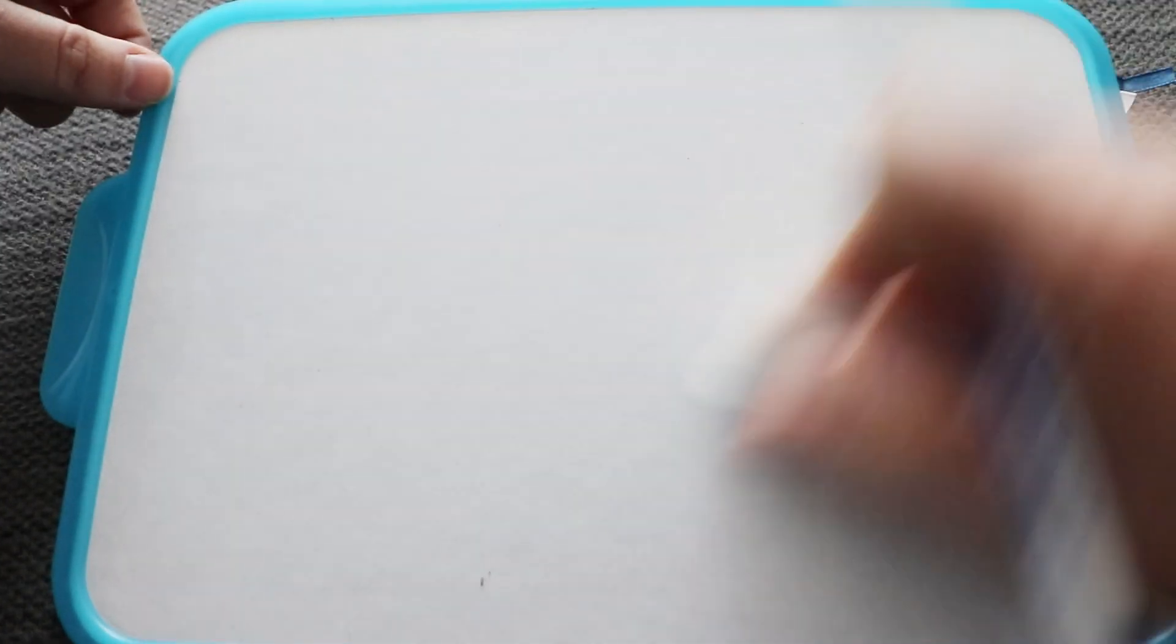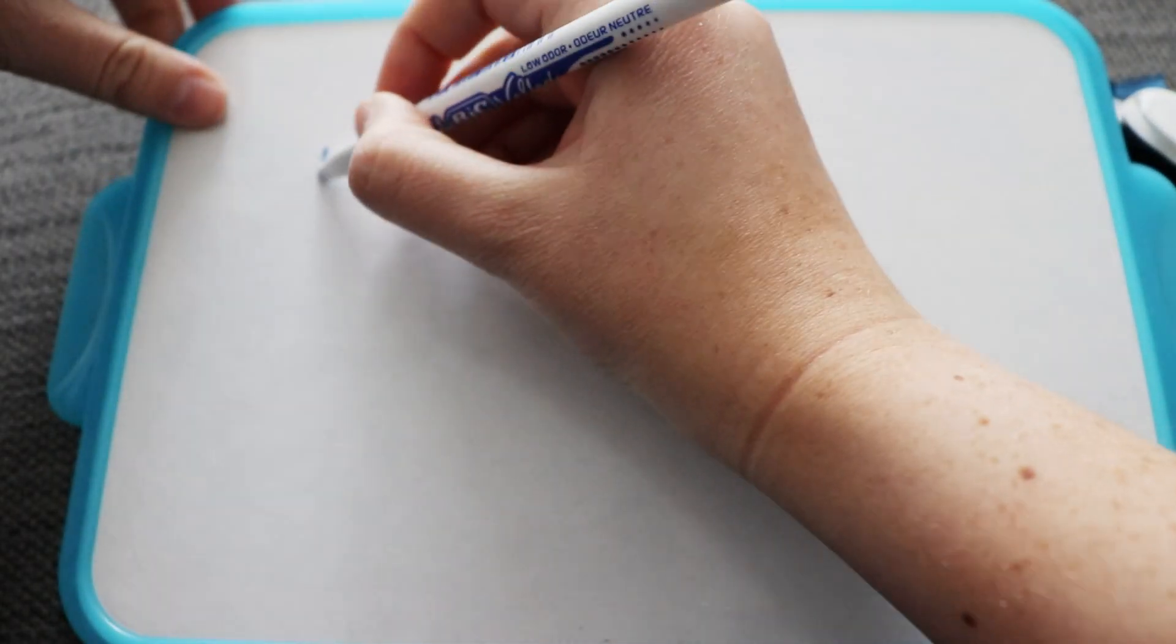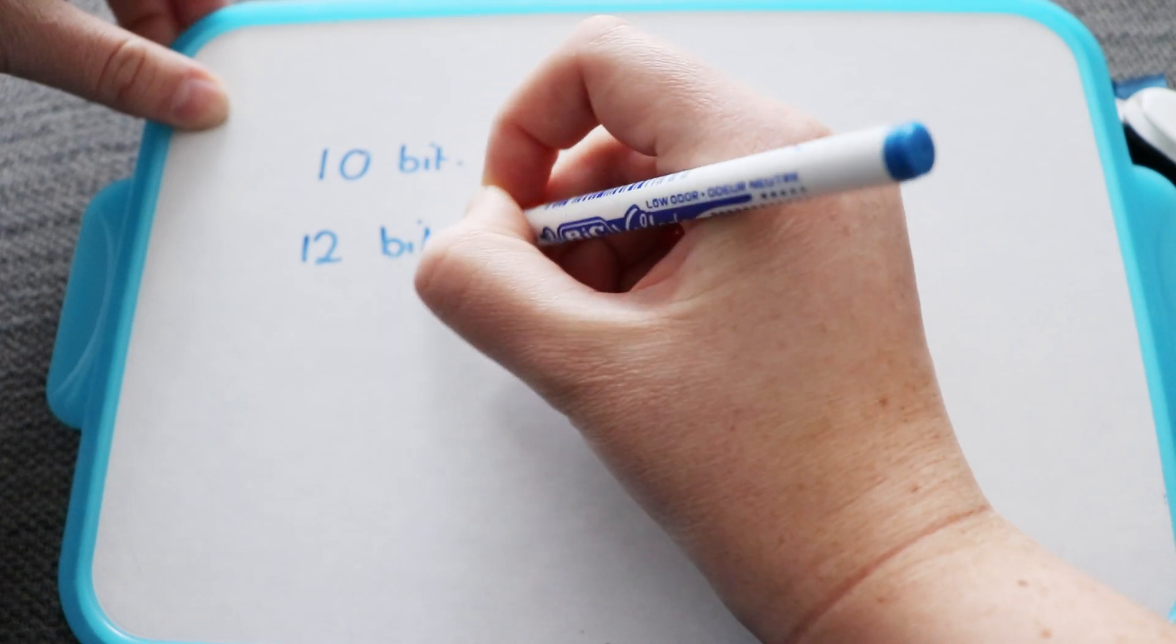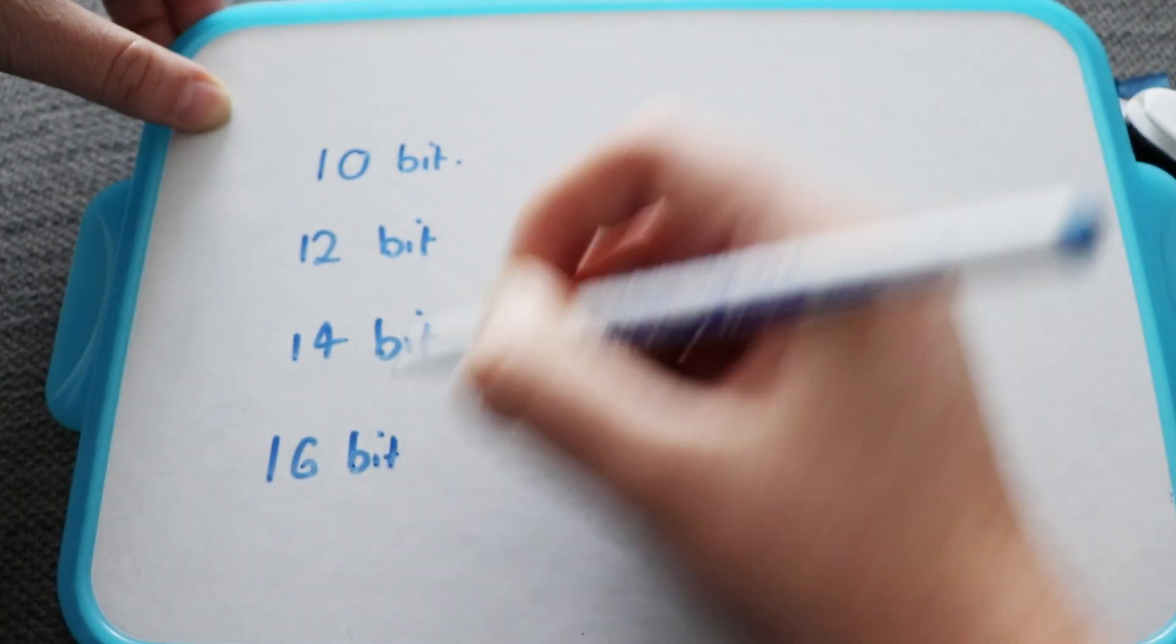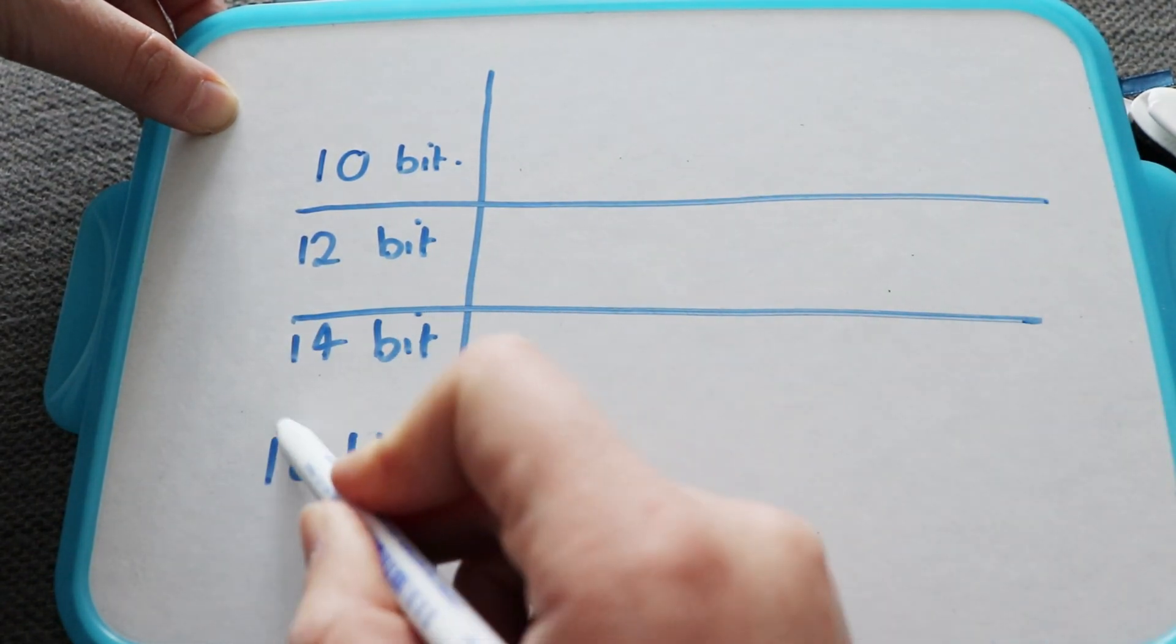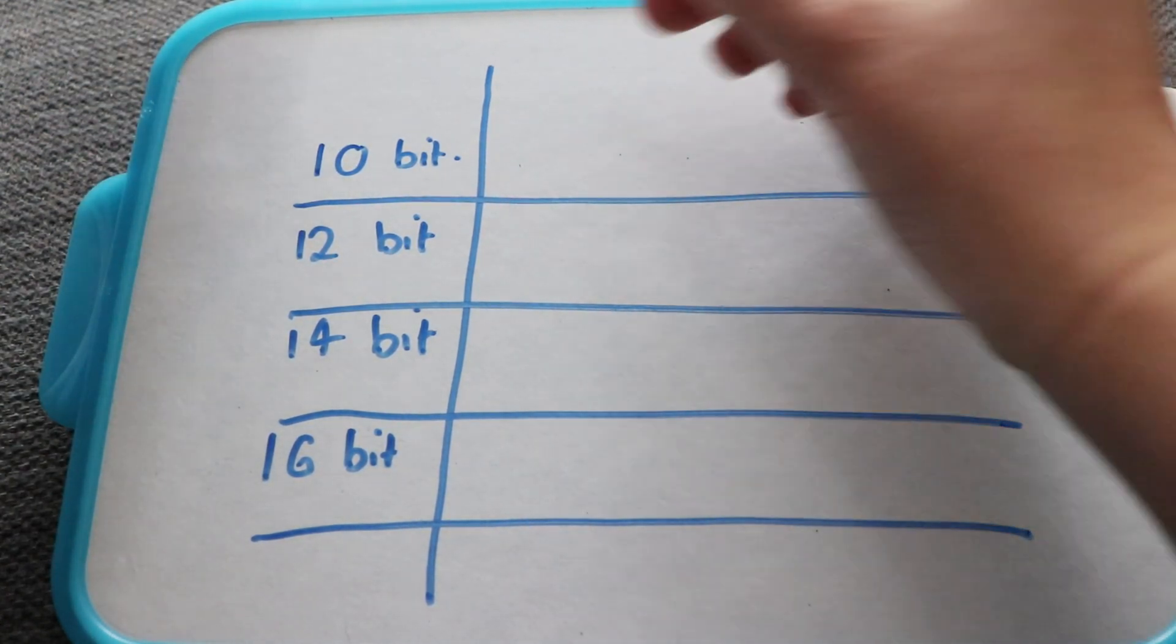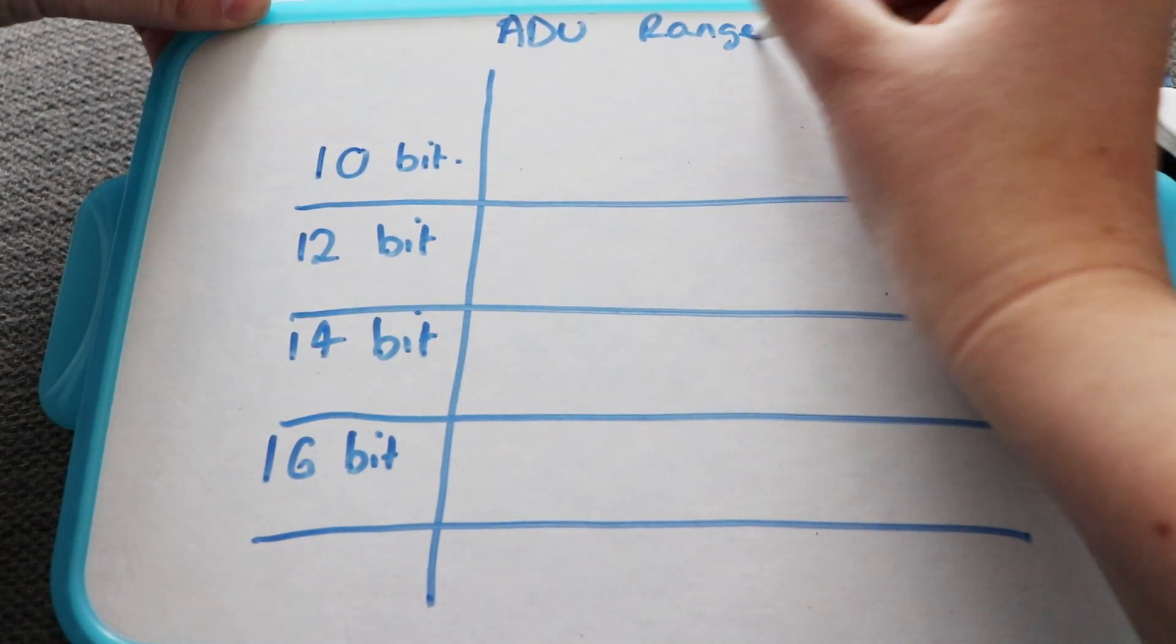So once you know what kind of bit camera your sensor has, there's some really easy math to do to find out what you need. So I'm just going to show you here: 10 bit, 12 bit, 14 bit, and 16 bit, and what I'm going to show you now is the ADU range your camera can cover.